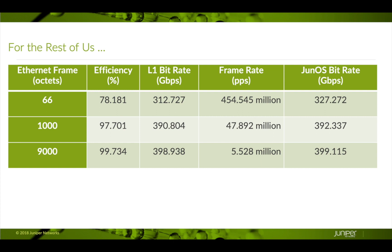Notice how the efficiency increases from 78 to 97 to 99 percent as the packet sizes grow. The L1 bit rate increases from 312 gigabits per second to 398 gigabits per second. The JunOS bit rate, which is calculated differently, grows from 327 gigabits per second to 399 gigabits per second — getting pretty close to 400G. It is important to note that neither the L1 bit rate nor the JunOS bit rate will actually hit 400G, because of the overhead of sending the MaxSec header, the preamble, or the inner packet gap.